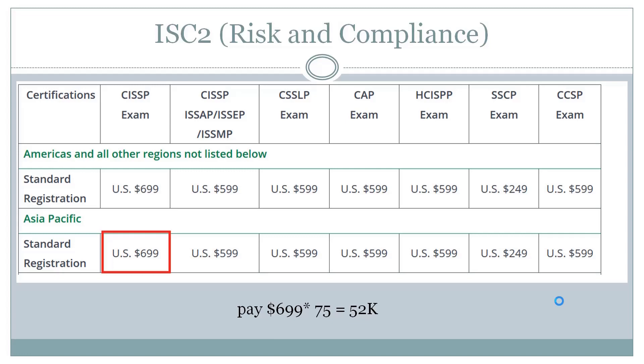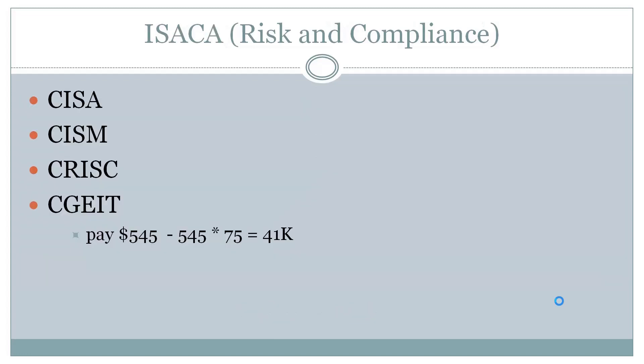The CISSP certificate costs $699. If you want to work in the risk and compliance domain, certifications like CISM and C-Risk are also valuable. The annual maintenance fee for some of these certifications is around $45. Risk and compliance roles involve auditing best practices within organizations.